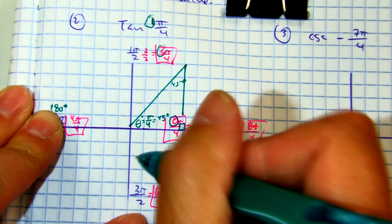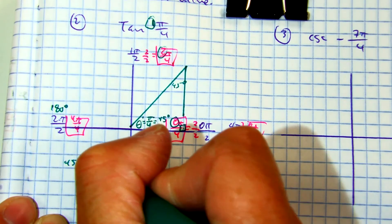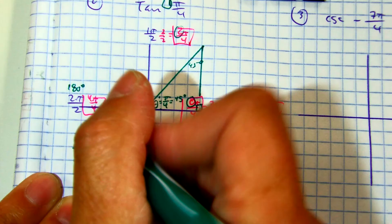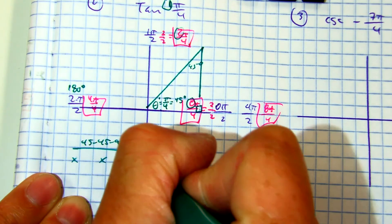Now I just need the formula for a 45, 45, 90. X, X, X radical 2.